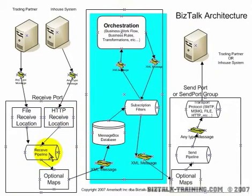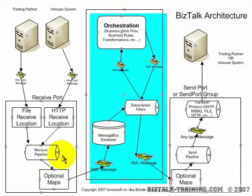At that point, you can also build your own pipeline in BizTalk using different stages, and if you really want to get fancy, you can write your own pipeline components in C#. For instance, one place I used to work, we received data that had a SOAP header on it. The pipeline took the SOAP headers and actually promoted them to what's called promoted fields, which is a concept we'll talk about in future videos.